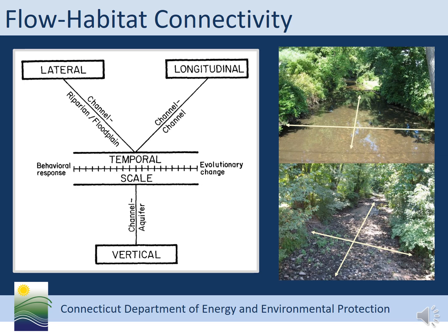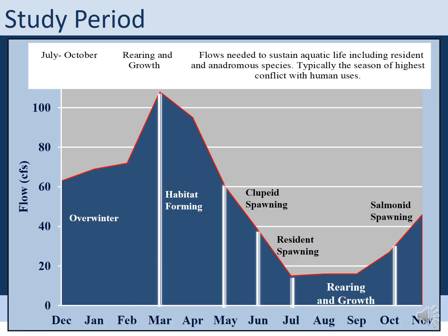Stream connectivity is important for the ecological health of the stream and downstream waters. We define stream connectivity as hydrologically connected pools and riffles that link stream habitat along a longitudinal continuum — that's upstream to downstream — while also recognizing the lateral dimension, the connection to the floodplain, and vertical connection to groundwater. We focus on the rearing and growth bioperiod, which is from July 1st through October 31st. These are the flows needed to sustain aquatic life, and also typically the season of highest conflict with human uses, such as lawn irrigation.